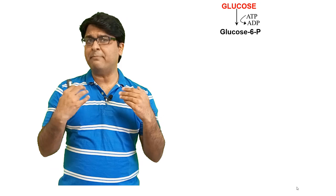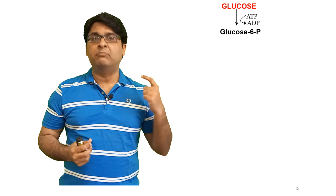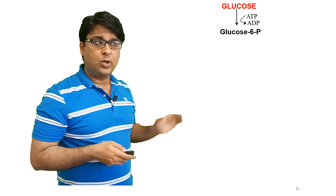Where does glycogen synthesis occur? It primarily can occur in many tissues, but primarily liver and muscle cells. Glucose enters and it's converted into glucose 6-phosphate by utilization of ATP. There's nothing new here — you can see my glycolysis videos and the overview of energy metabolism video; all the links are in the description. So now you've got glucose 6-phosphate.